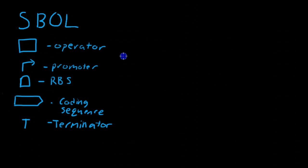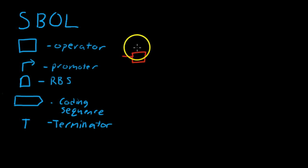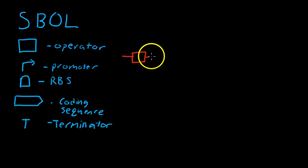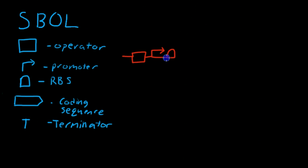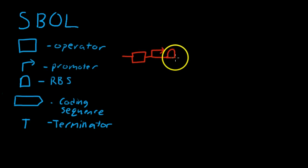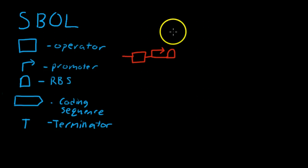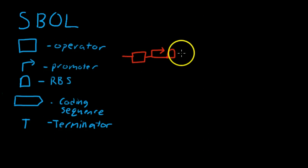Drawn together on a segment of DNA, they look like this. First you have the operator, and what the operator is, is it allows for transcription factors to bind to it, which can assist in the attachment of the RNA polymerase. The RNA polymerase is actually going to bind onto the promoter sequence, which supplies a necessary foundation site for the RNA polymerase to bind, so that it can then transcribe down the rest of the gene. During transcription, it's going to transcribe this ribosome binding site. When this produces mRNA, which is a product of transcription, this ribosome binding site is going to be transcribed onto the mRNA, which will allow for the ribosome to bind onto the mRNA.